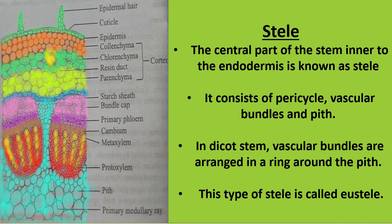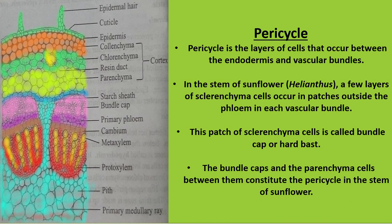Inner to the endodermis, the stelar region is present, which includes the pericycle, vascular bundle, and pith. In the dicot stem, the vascular bundles are arranged in a ring-like structure around the pith, and this type of arrangement is called eustele. The pericycle is a layer of cells occurring between the endodermis and the vascular bundle.